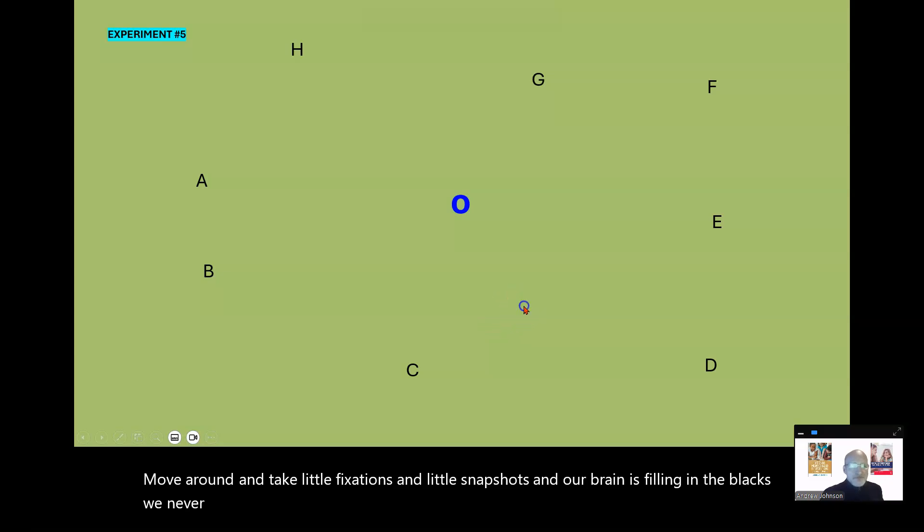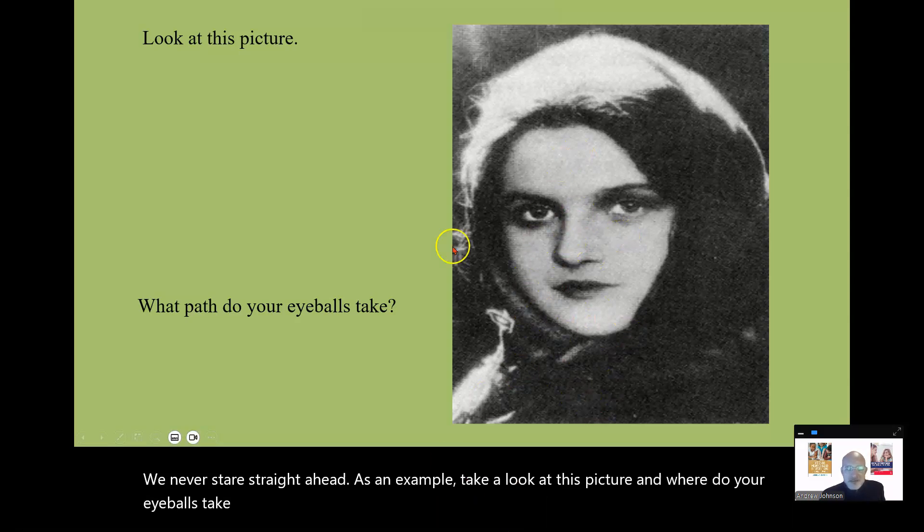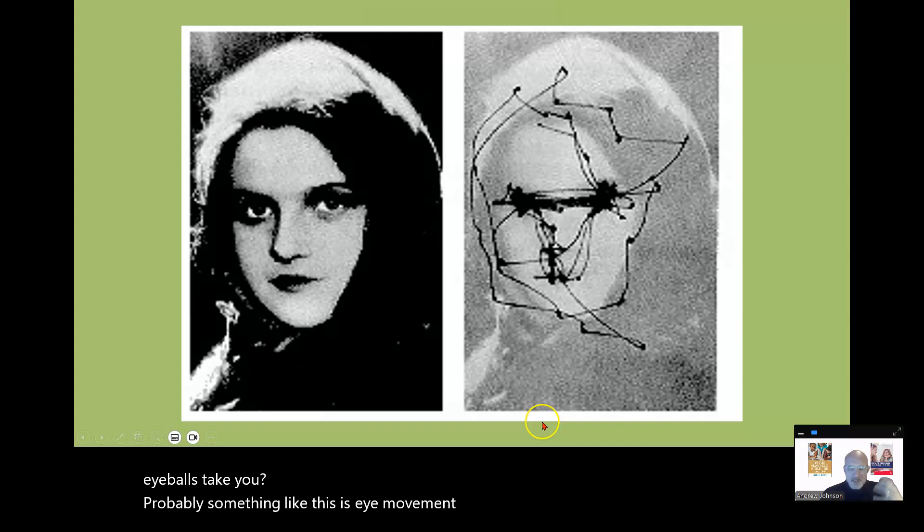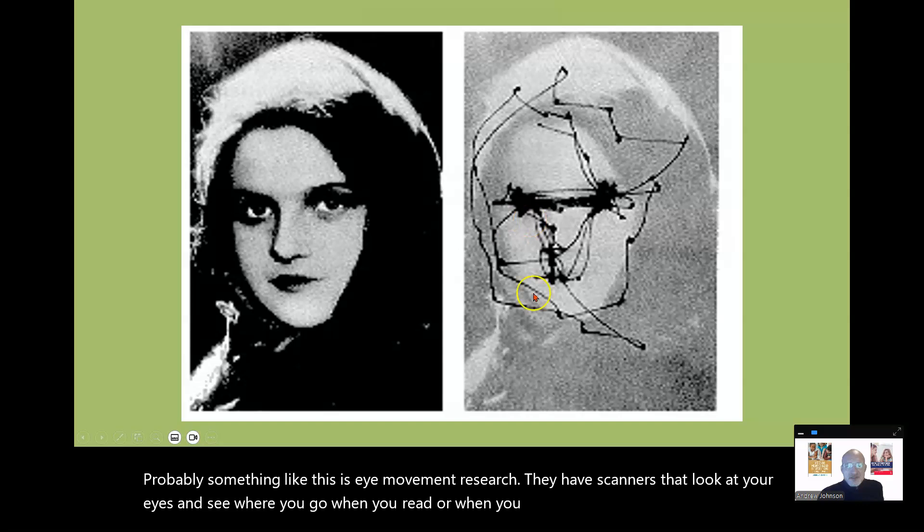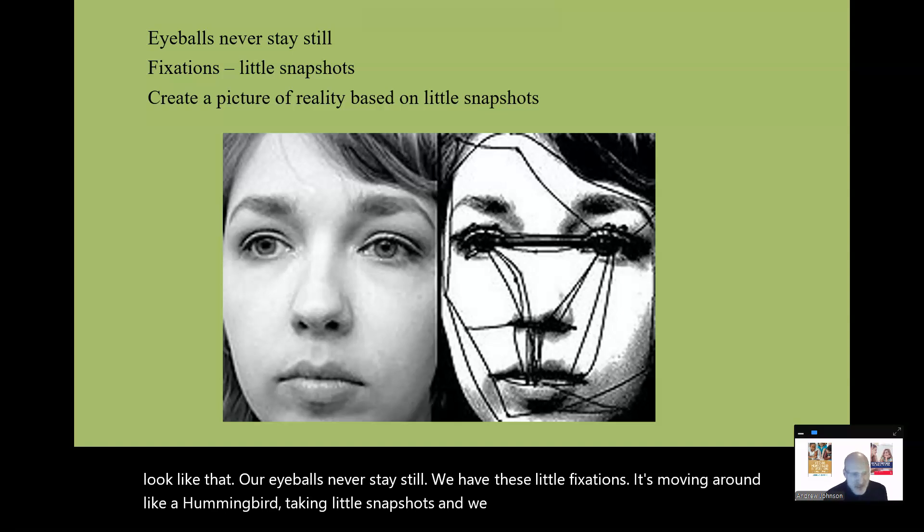We never stare straight ahead. As an example, take a look at this picture, and where do your eyeballs take you? Probably something like this. This is eye movement research. They have scanners that look at your eyes and see where you go when you read or when you look at a picture. Yes, we tend to look like that. Our eyeballs never stay still. We have these little fixations. It's moving around like a hummingbird, taking little snapshots, and we create this picture of reality based on the snapshots, and we're filling in the blanks.